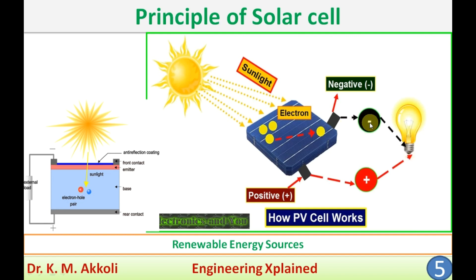Welcome to this session. I am going to discuss the principle of the solar cell. The solar cell is also called a photovoltaic cell, which converts directly the sun's radiation energy into electricity. This is one of the solar energy conversion methods and it is a very important and convenient method. In large scale, power generation can be carried out using solar cell energy conversion.